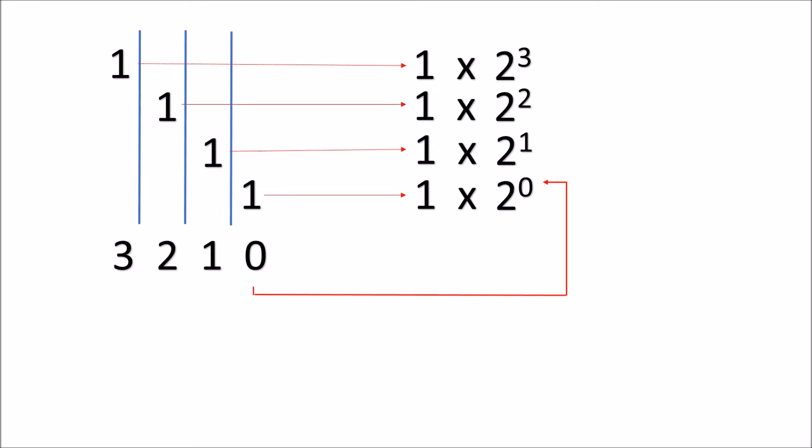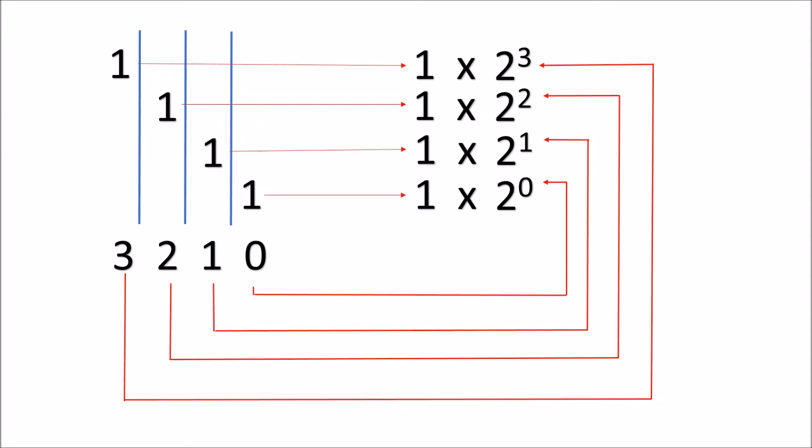So the first value, 1 x 2 to the zeroth power. The second value, the second number from the right, 1 x 2 to the first power. The third value, 1 x 2 square. The fourth value, 1 x 2 cube.